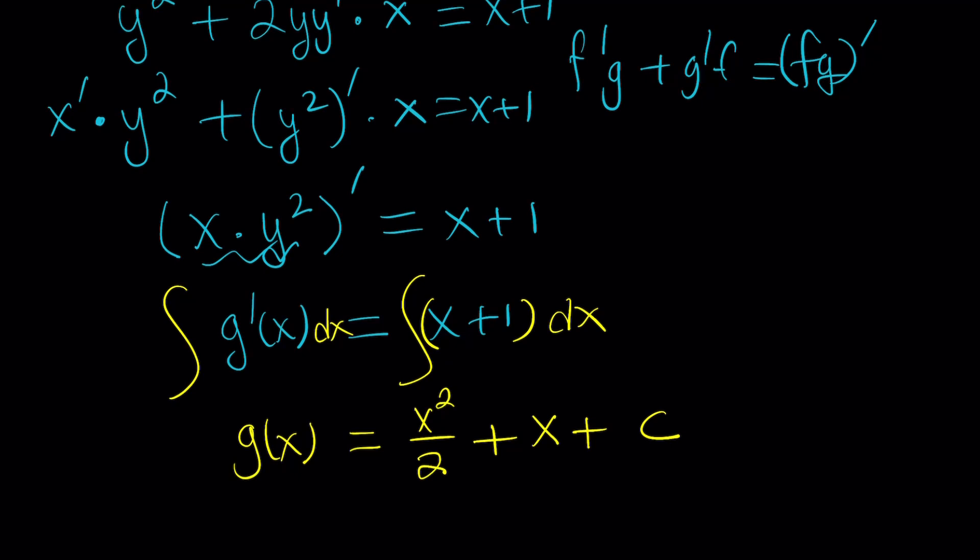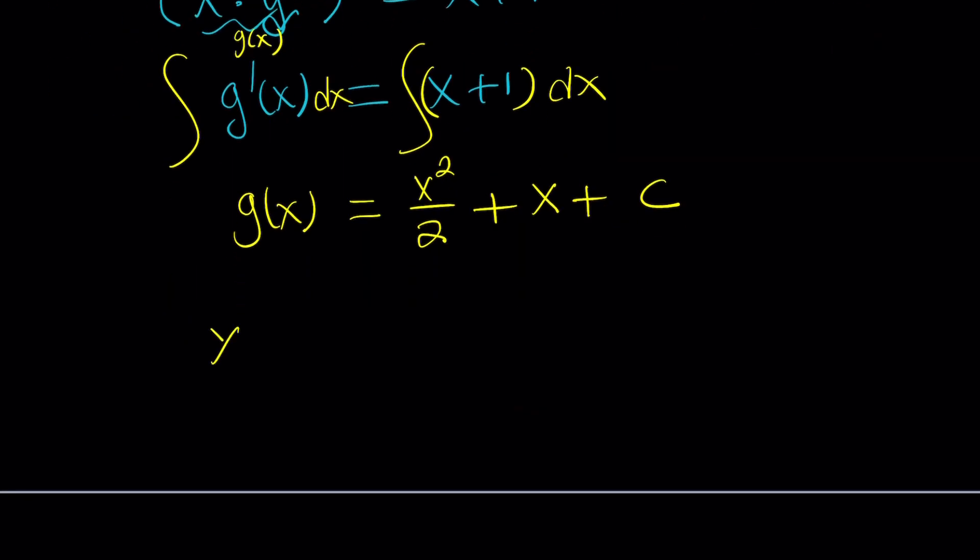Well, g(x) is x times y². So we're going to replace g(x) with xy². Let's do it: xy² = x²/2 + x + c. Remember, our goal is to solve for y as a function of x. So why not divide everything by x? We get y² = x/2 + 1 + c/x, a constant divided by x, which is a rational function.